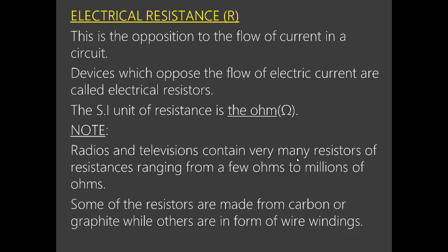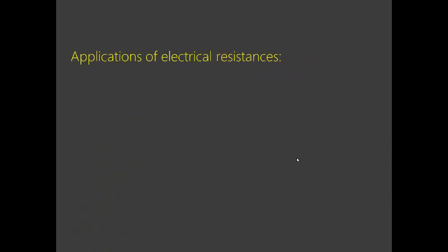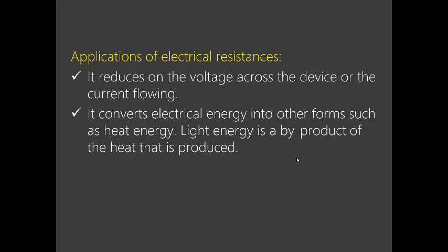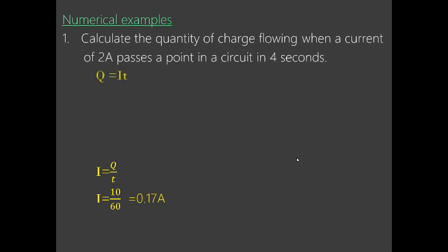Some resistors are made from carbon or graphite, while others are in the form of wire windings. Applications of electrical resistance include: reducing voltage across a device, reducing current through an electronic device, and converting electrical energy to heat. For example, filament bulbs have thin filaments with high resistance that convert electrical energy into heat, causing the wire to glow white hot and produce light.